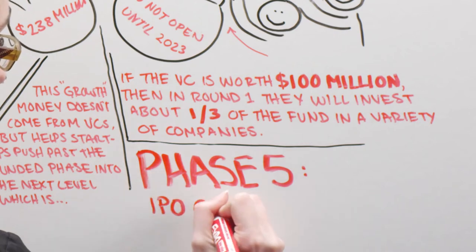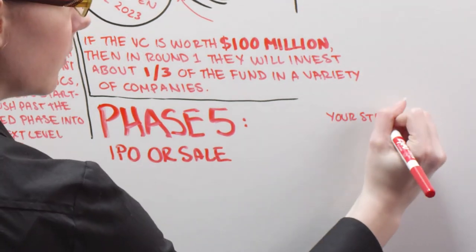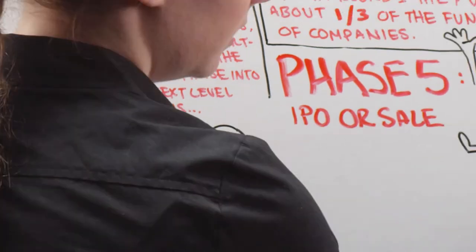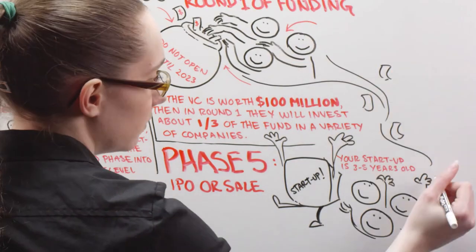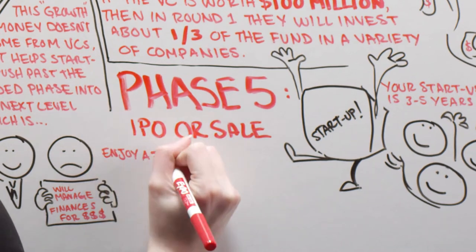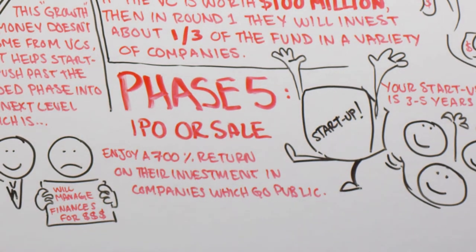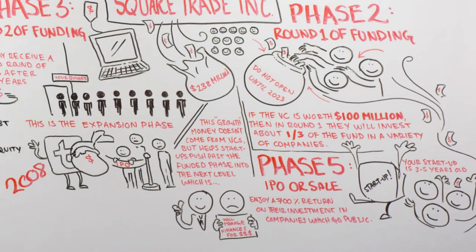Phase 5: IPO or Sale. By now, your startup is 5 to 10 years old. You've either made it or folded. Now, the venture capitalists are ready for their payday when you sell or go public. Most VC firms enjoy a 700% return on their investment in companies which go public. However, many of their investments won't make it to phase 5.